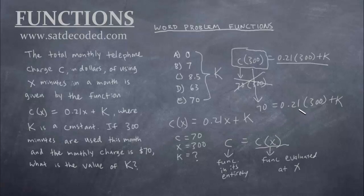So let's go ahead and solve this. If we whip out our calculator, 0.21 times 300 is 63. And then let's bring down the k. So 63 + k = 70. So what does k have to be? Well, it has to be 7, because 63 + 7 = 70. So as long as you don't fall for that one pitfall, as long as you recognize that c really is the same thing as c(x), then you'll be good. Let's try one more example.